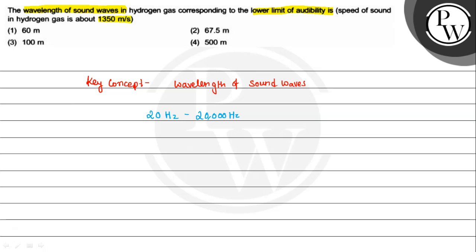The human ear can listen in the range of frequency, so we call this the lower limit of audibility. This means the frequency is 20 hertz.